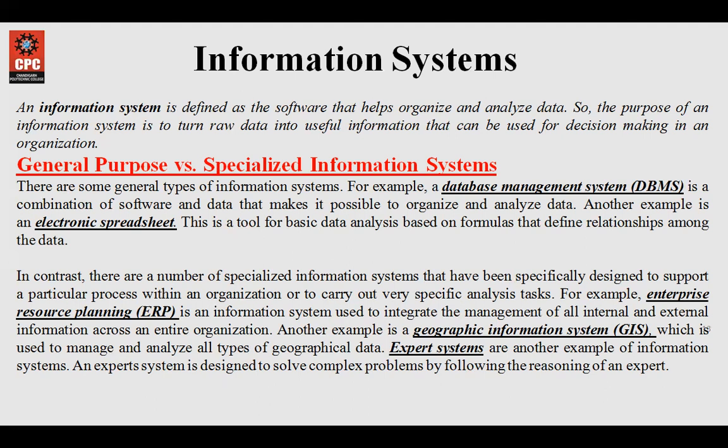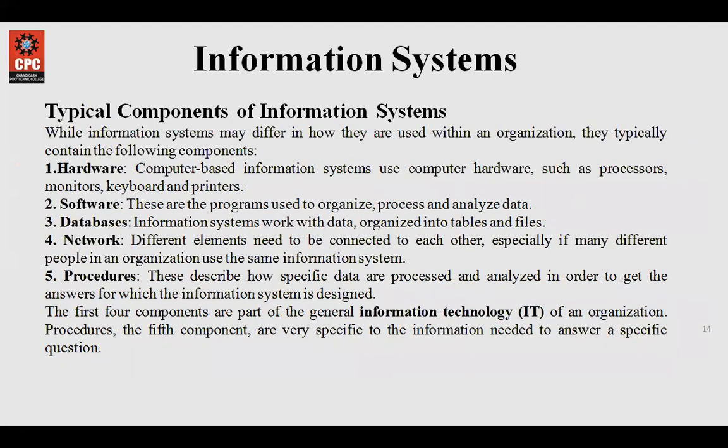Expert systems are designed for solving complex problems, and most expert systems are now based on AI technology and neural networks. The components of an information system are: hardware, software, databases, networks, and procedures. Procedures are most important — they give us guidelines on how to use any system, what type of data should be entered, and what type of output is expected. They also help us handle and use the different components of the system easily.